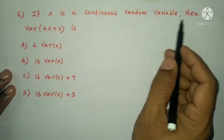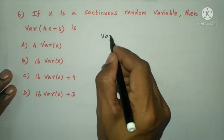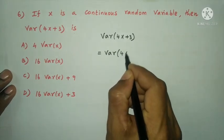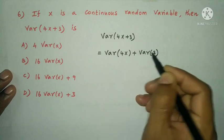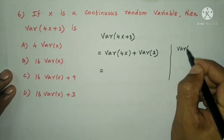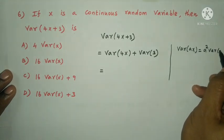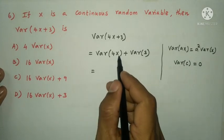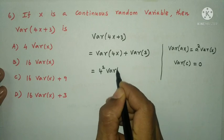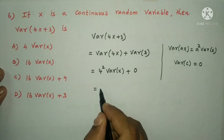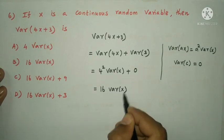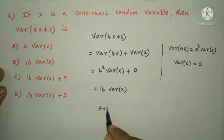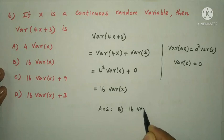Next question: if X is a continuous random variable, then variance of (4x + 3) is? Using the property: variance of (aX + b) = a²·variance(X), and variance of a constant = 0. So variance(4x + 3) = 4²·variance(X) = 16·variance(X). The answer is option B, 16·variance(X).